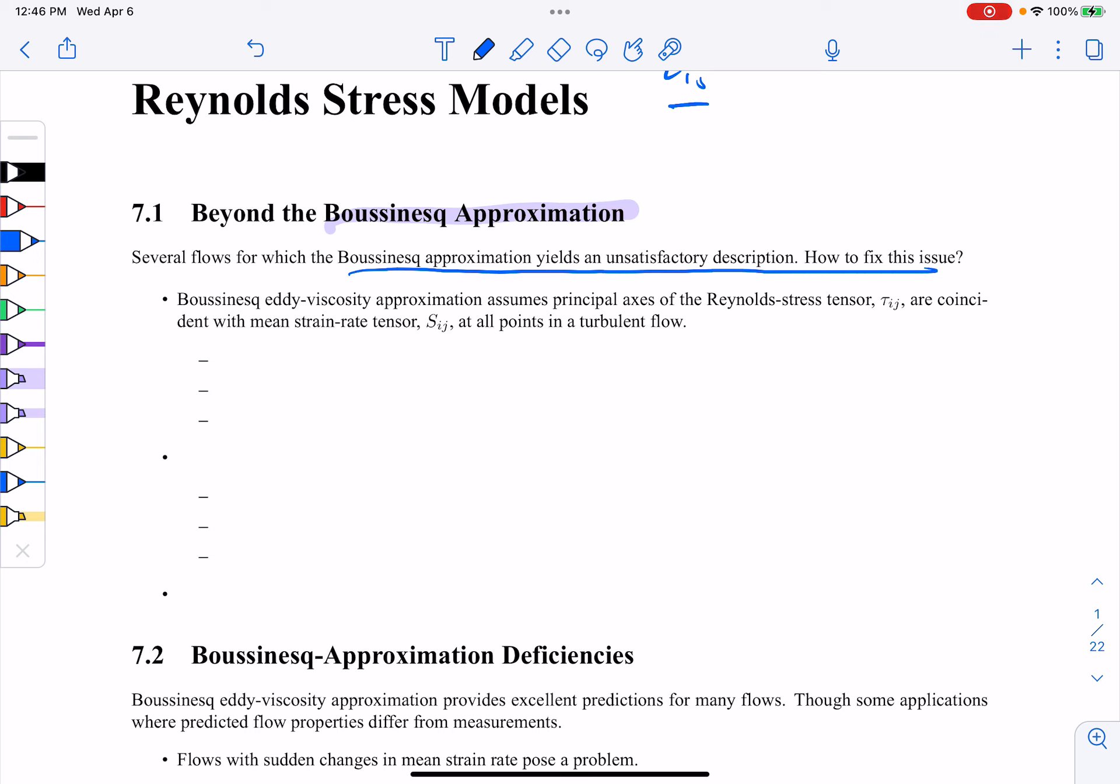So these are eddie viscosity approximations, and the Boussinesq approximation will assume that the principal axes of the Reynolds stress tensor, tau ij, are indeed coincident with the mean strain rate tensor, Sij, at all points in the flow in space and time.